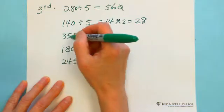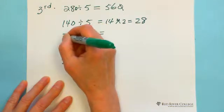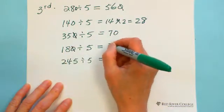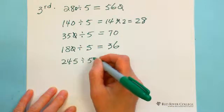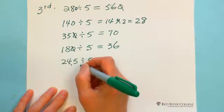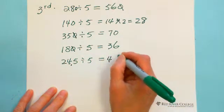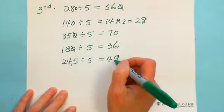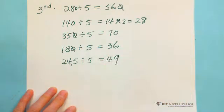For 245 divided by 5: divide by 10 first — move the decimal one digit to the left — giving you 24.5, then double it. Double 24 is 48, plus 1 gives 49. So 245 divided by 5 equals 49. That's the third trick.